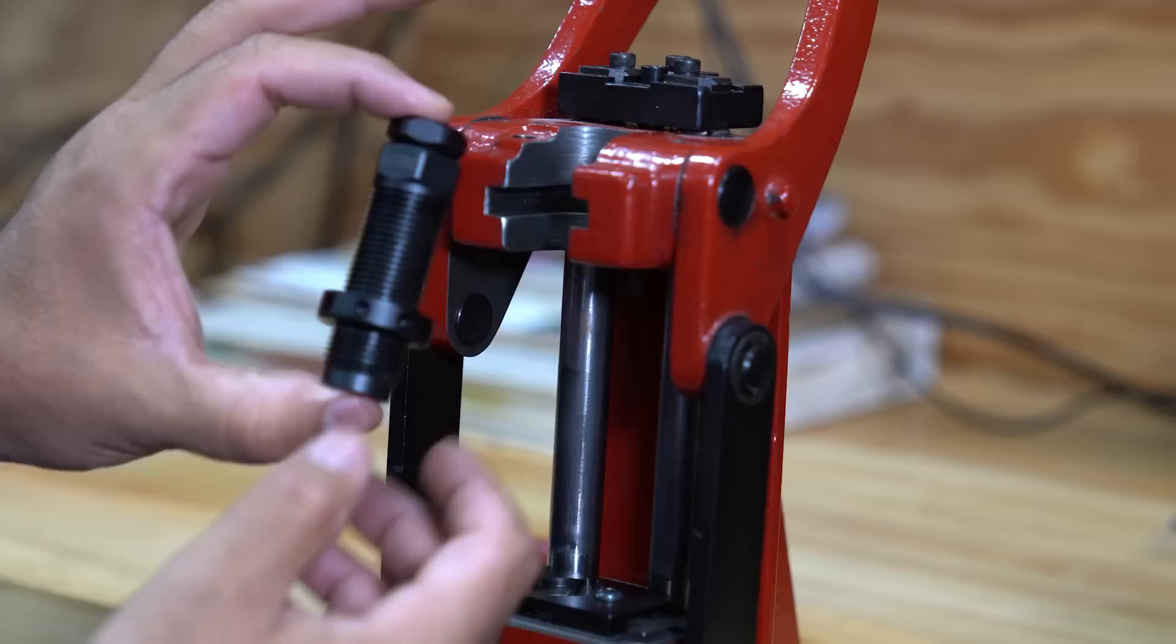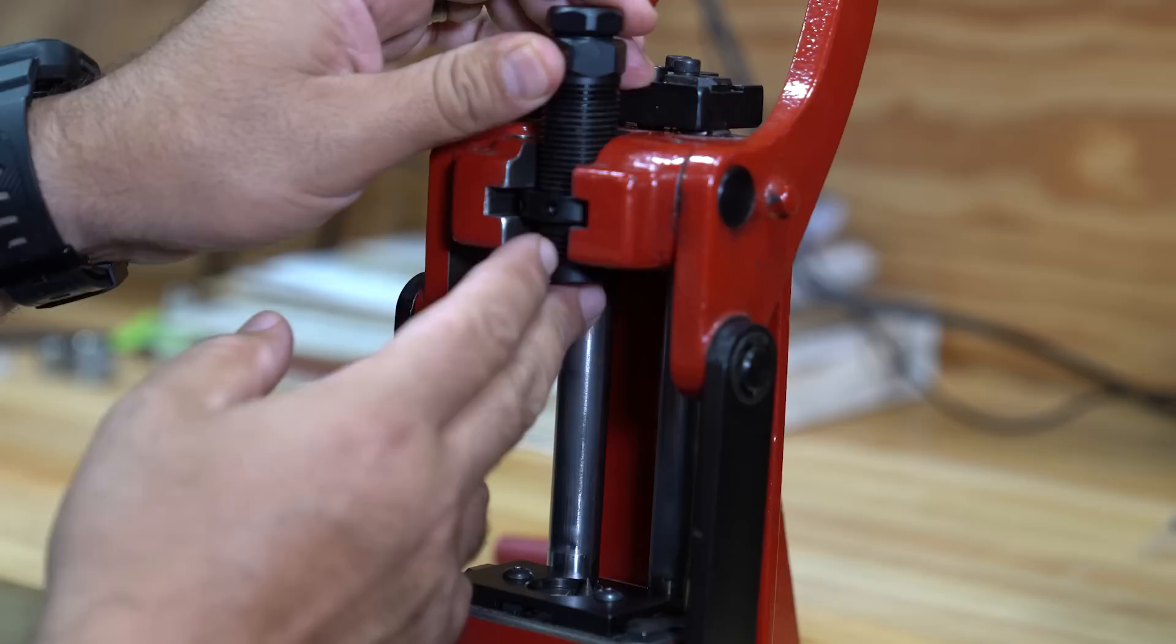Hey, what's going on? Eric Cortina here. I've got a cool new product that we want to show you today. This is an expander mandrel die.